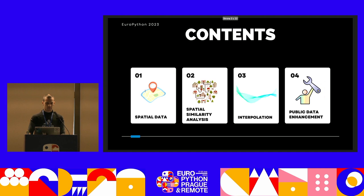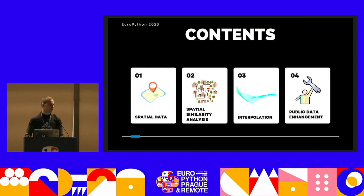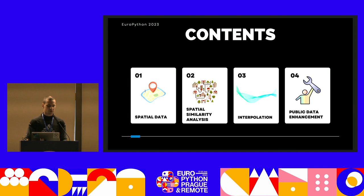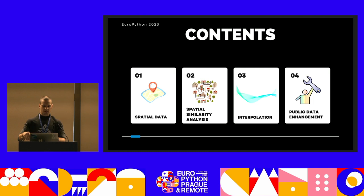What will this talk be about? First, I will talk about spatial data because I'm not sure how many of you know something about it — it could be useful from a general data science perspective. Then we will gradually go to harder topics: spatial similarity and how our neighborhood is similar to our place, then interpolation — which is more than just filling missing values with average or median — and finally, public data enhancement. That's an important topic because we have a lot of public data from government, but its quality is very weak and it's hard to merge with data from other sources.